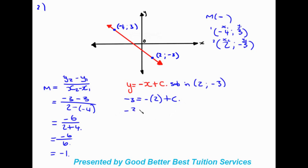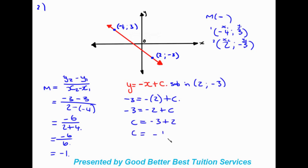We get minus three equals minus two plus c. The two goes over to the left and becomes positive: negative three plus two gives c = negative one. That's our y-intercept. Our final equation is y = -x - 1 for this straight line.